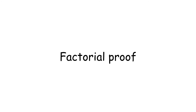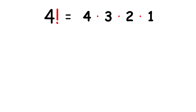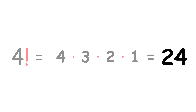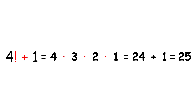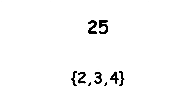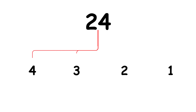Factorial proof. In the natural numbers, there is a function called the factorial, written with an exclamation mark. To demonstrate, let's calculate 4 factorial. We simply multiply together every positive natural number which is less than or equal to 4, giving a result of 24. Now, think about calculating 4 factorial plus 1. Notice that 25 is not divisible by any natural number from 2 to 4. We got 24 by multiplying every natural number from 1 to 4, so each of those numbers must be a factor of 24.